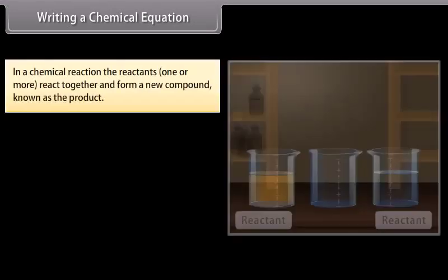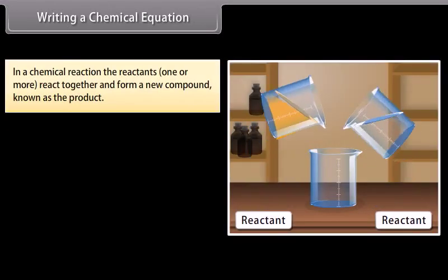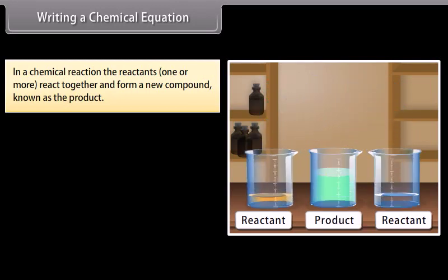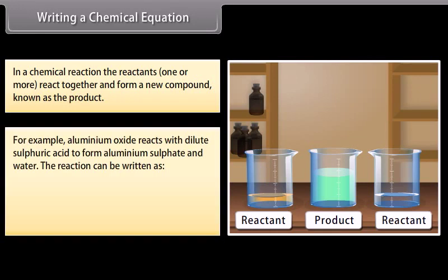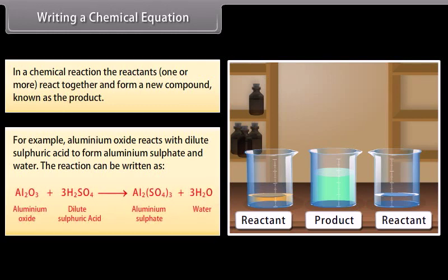In a chemical reaction, the reactants, one or more, react together and form a new compound known as the product. For example, aluminum oxide reacts with dilute sulfuric acid to form aluminum sulfate and water. The reaction can be written as aluminum oxide plus dilute sulfuric acid gives aluminum sulfate and water.